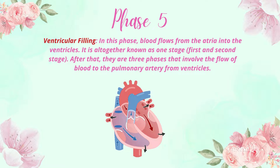Phase 5 is ventricular filling. In this phase, blood flows from the atria into the ventricles. Phases 1 and 2 together form one stage, followed by three phases involving blood flow to the pulmonary artery from the ventricles — that is phases 3, 4, and 5. This cycle then repeats continuously.